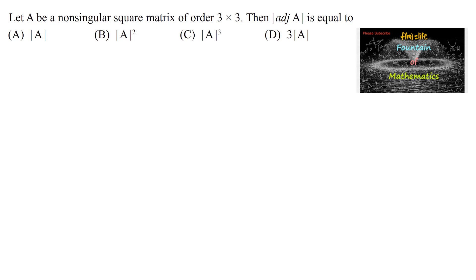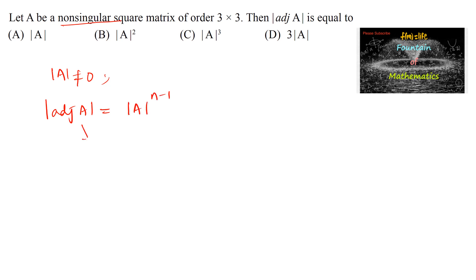Let A be a non-singular matrix of order 3 by 3. Find the determinant of adjoint of A. Since it is non-singular, determinant of A is not equal to 0. We know that the determinant of adjoint of a matrix A of order n is equal to det(A) to the power of n-1.